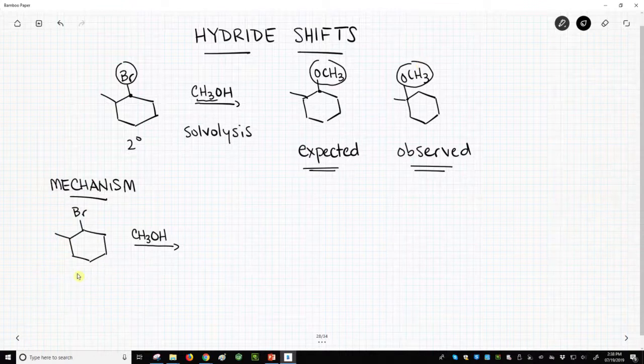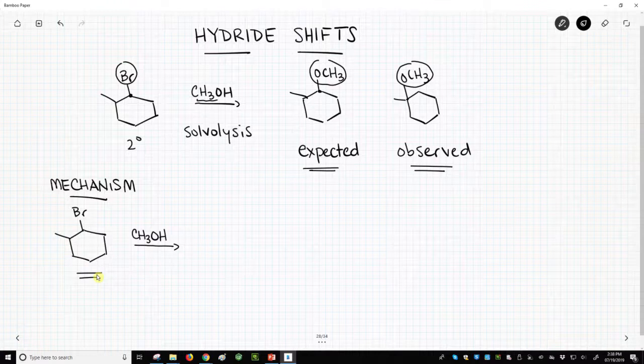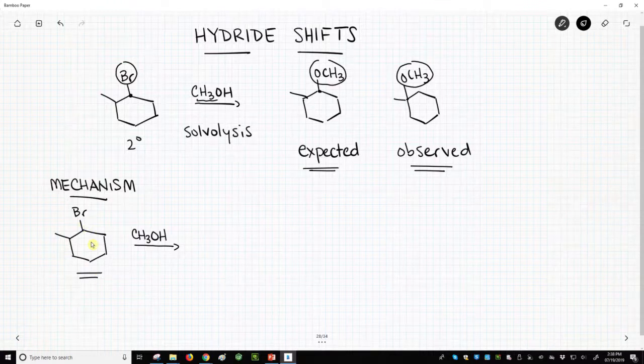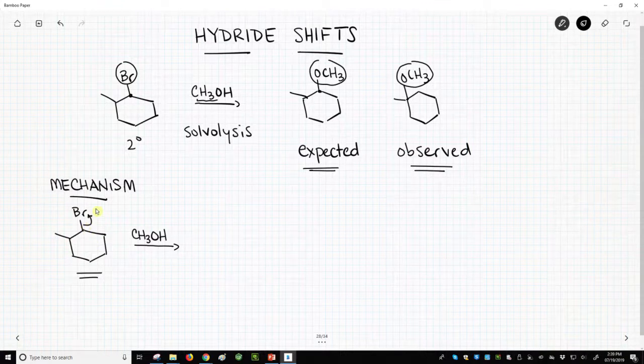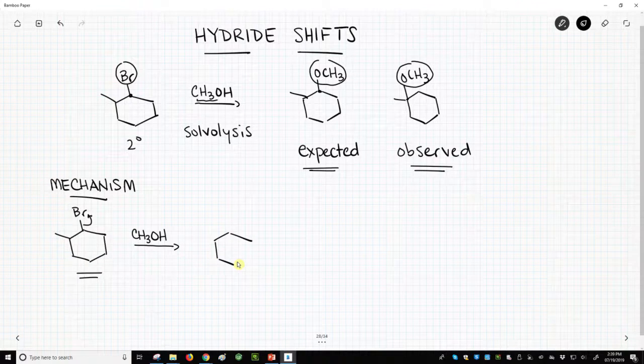Here's our starting material on the bottom left. We have our bromide. The first step in one of these SN1 solvolytic reactions is that the leaving group leaves, and this gives us a carbocation intermediate.